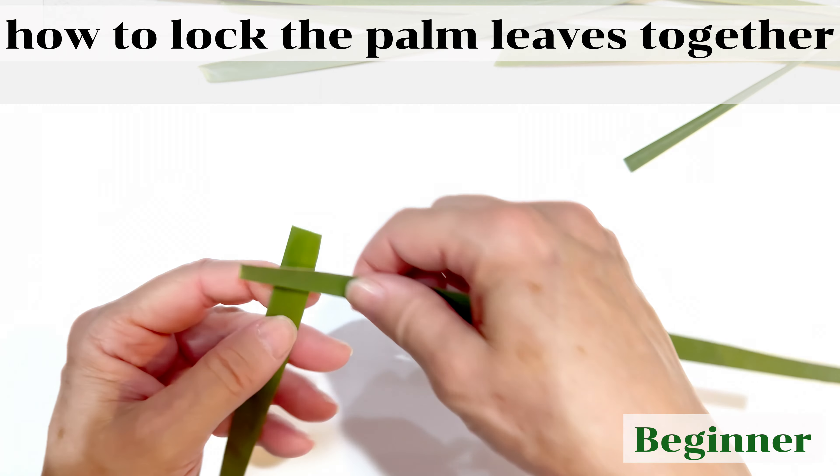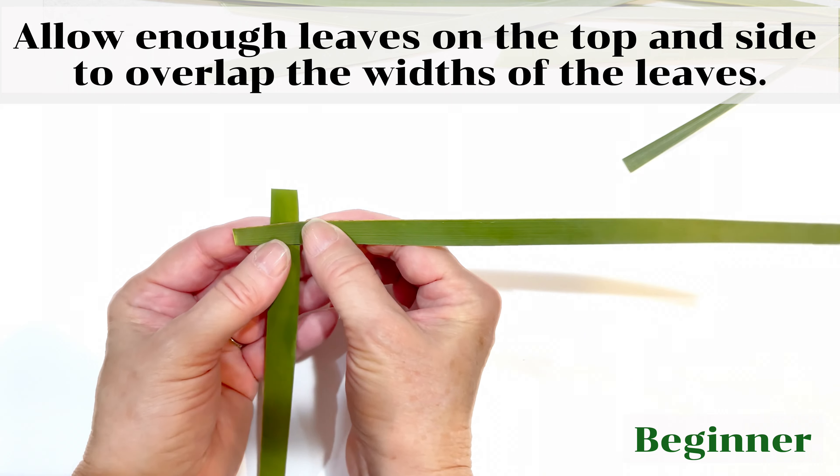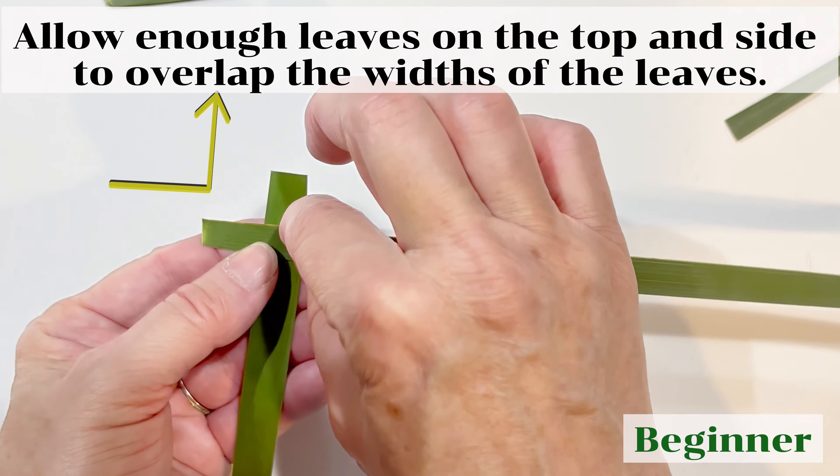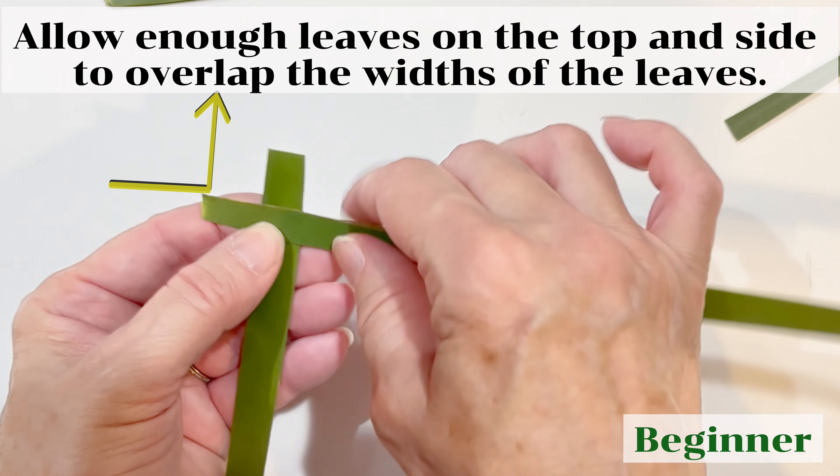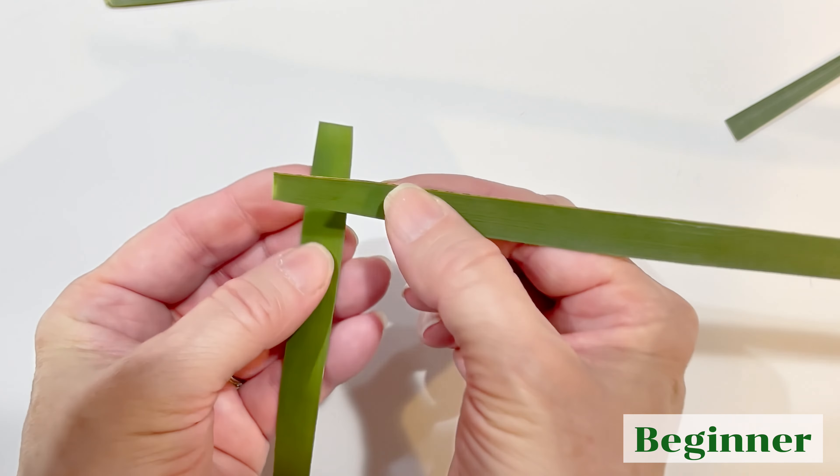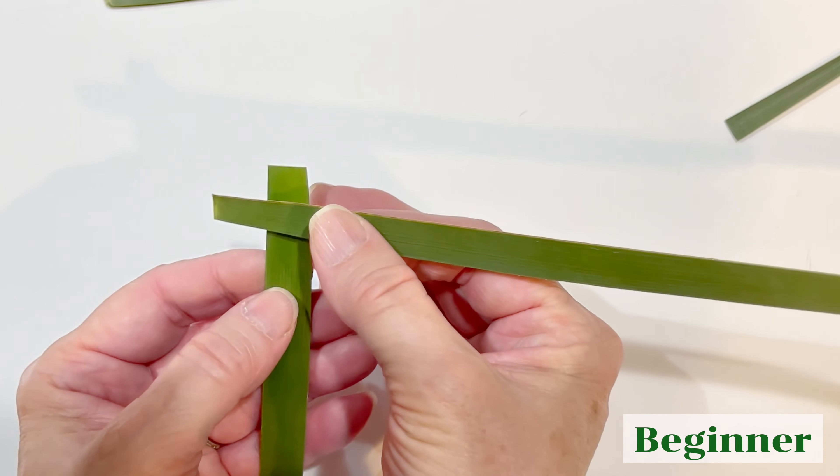We're going to overlap them at the top and make a right angle. Leave enough at the top so that it matches this thickness, because we're going to fold it down. And what we want to do with this one is leave enough thickness here. Now, notice how the horizontal one is on top of the vertical one, so we're going to lay it down like this.